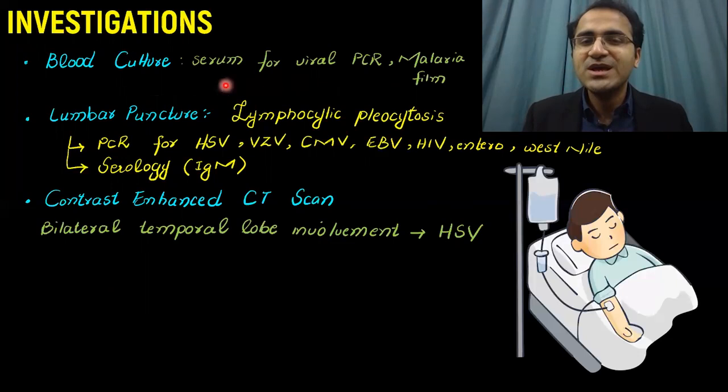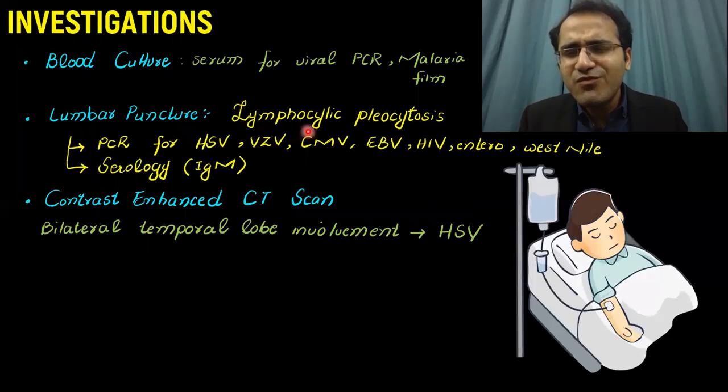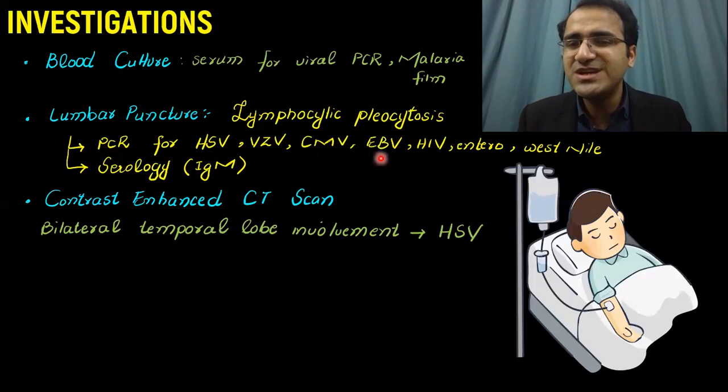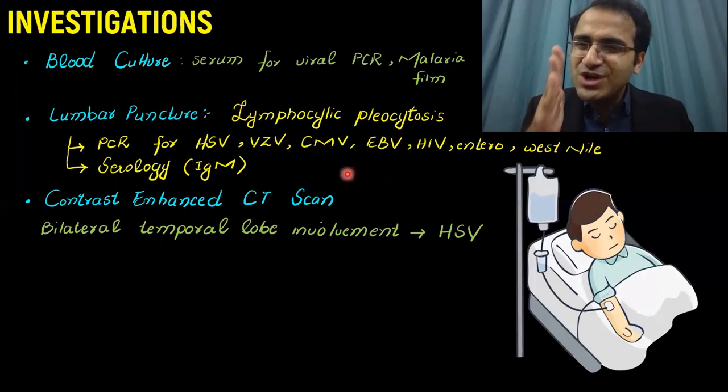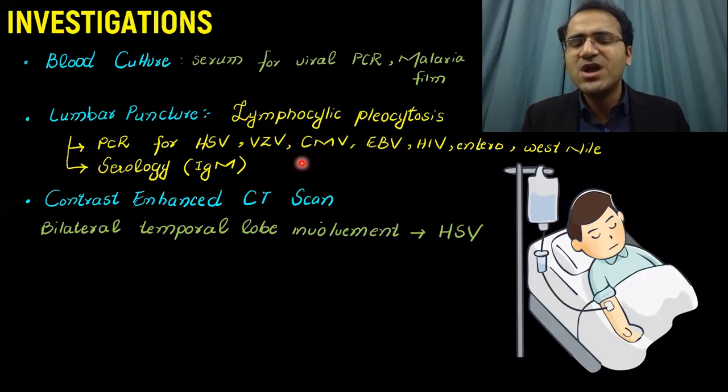Serum for viral PCR — HSV virus is the most common cause. Do lumbar puncture, and in lumbar puncture most often you would see lymphocytic pleocytosis, which is seen in viral infections. Go for PCR of HSV, VZV, CMV, EBV, HIV, Enteroviruses, and West Nile viruses. You can diagnose the exact cause of Encephalitis this way. Most often it is HSV which causes it, and HSV PCR is usually performed. You can also go for serology against these viruses — antibodies against them can be detected.